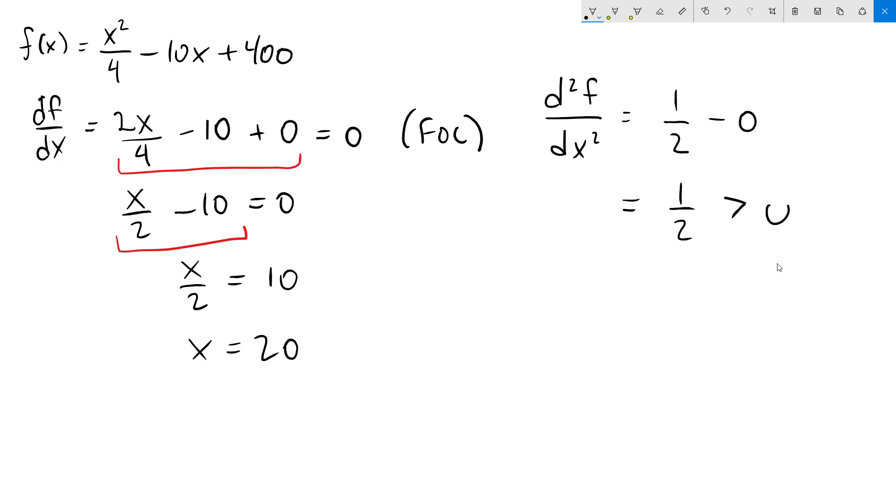So our second derivative is 1 half. We note that this is greater than 0, which means that we have a minimum. If this had been less than 0, then we would have had a maximum.